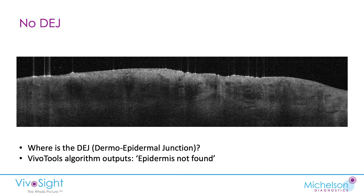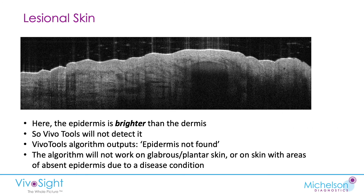Here's another example of lesional skin — probably an eczema of some description. We can't see any DEJ, and the VivaTools algorithm outputs 'epidermis not found.' There's a similar story on lesional skin when the epidermis is actually brighter than the dermis — VivaTools will not detect it and outputs 'epidermis not found.' The algorithm also doesn't work on other types of skin such as glabrous or plantar skin, or areas where there is absent epidermis due to a disease condition.